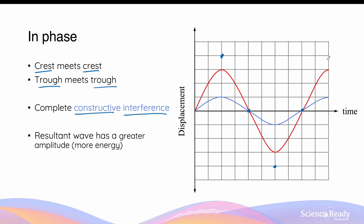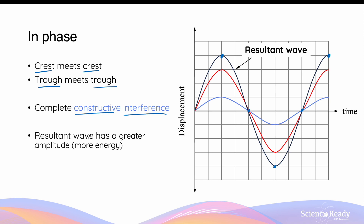If you do this at every single point and join the dots together, you will form the resultant wave. The resultant wave in black has the same frequency but, more importantly, a greater amplitude that equals the sum of the amplitudes of the two waves that underwent superposition. It's important to also remind yourself that the amplitude of a wave relates to its energy. So when these two waves are added together through constructive interference, the resultant wave has more energy as well.